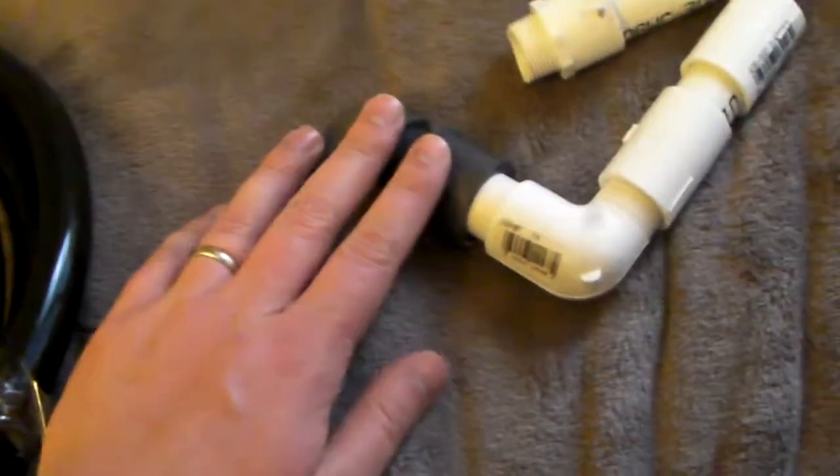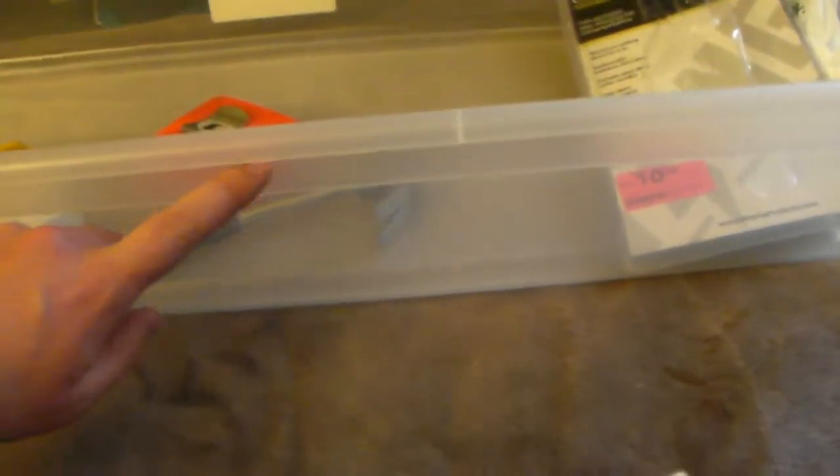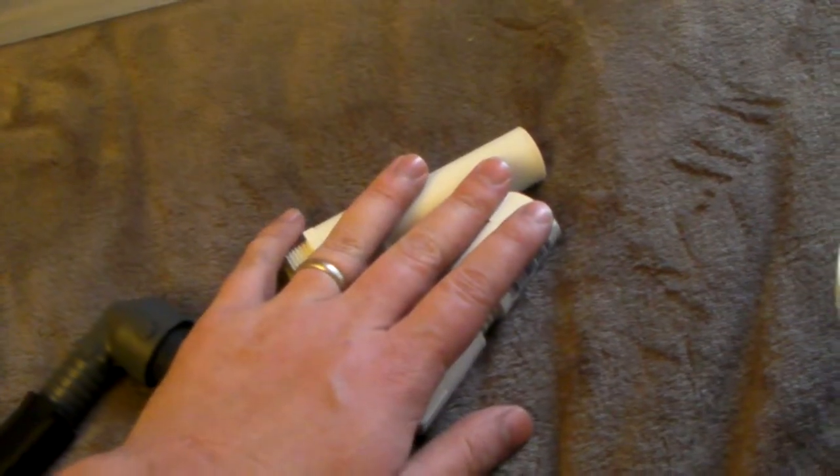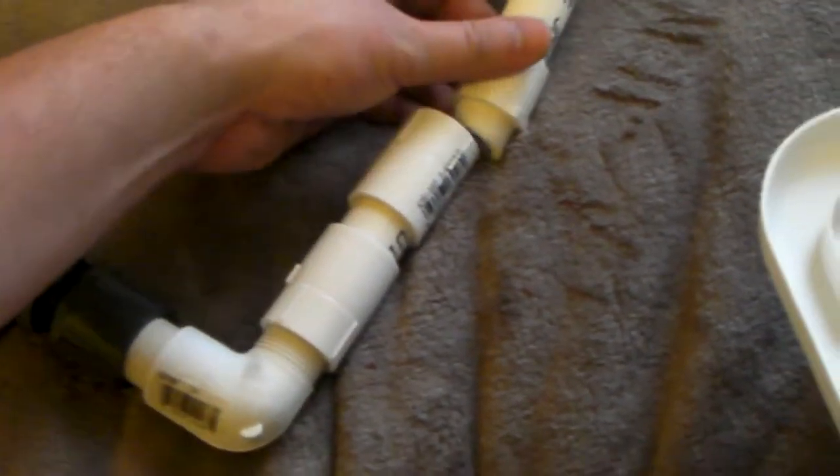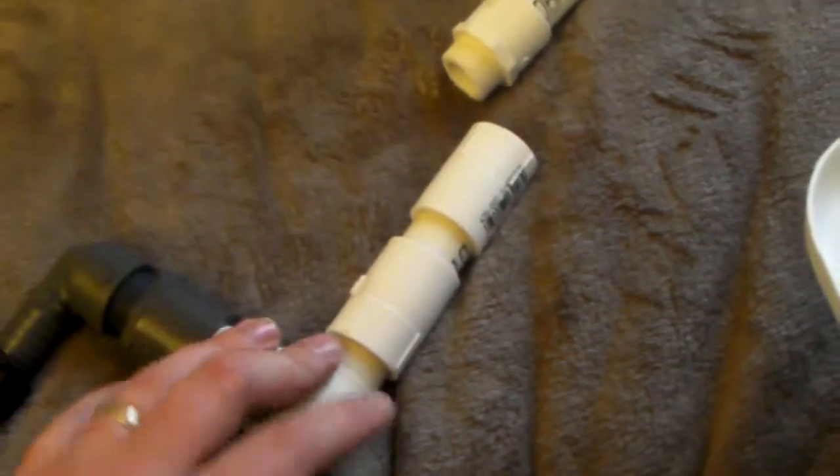I originally bought these two pieces for an overflow to go right here, that way in case the siphon—this is going to be a bell siphon. This is going to be a bell siphon. Top of the siphon. More pieces in case this doesn't work, I'll have a drain hole with an overflow.